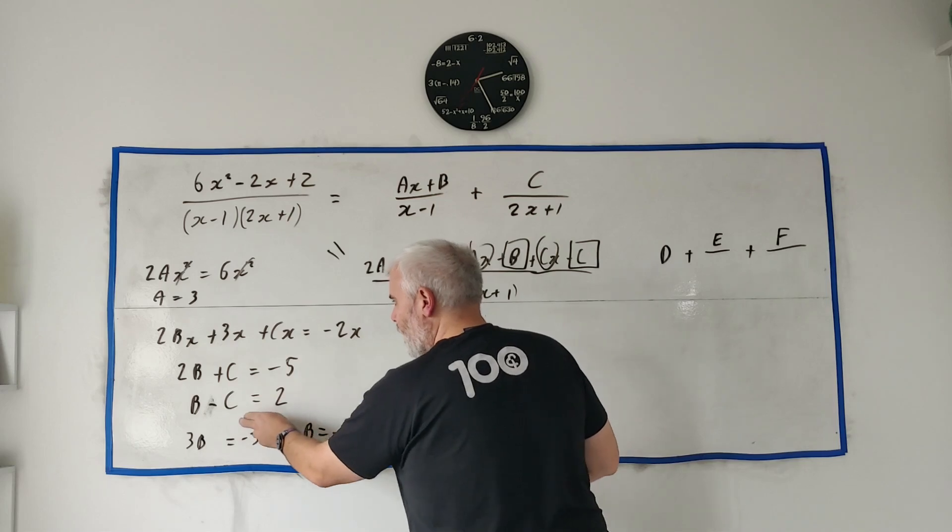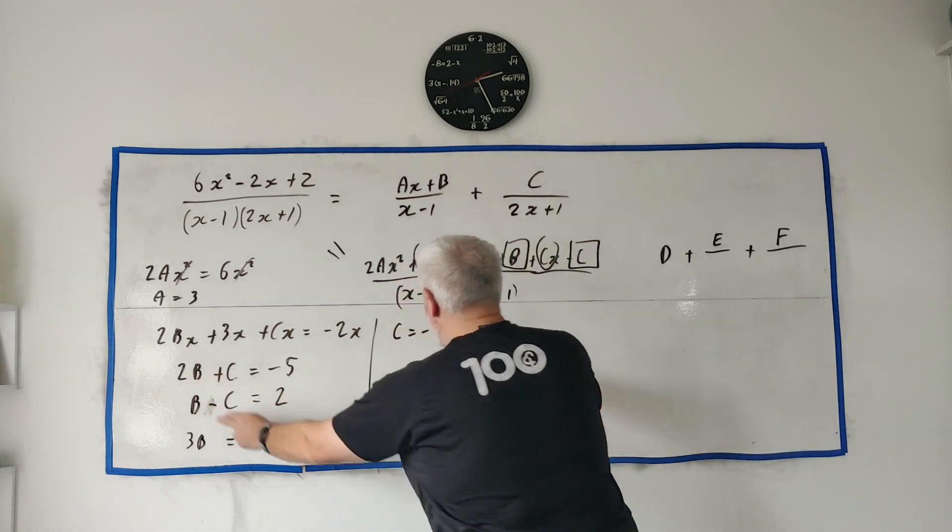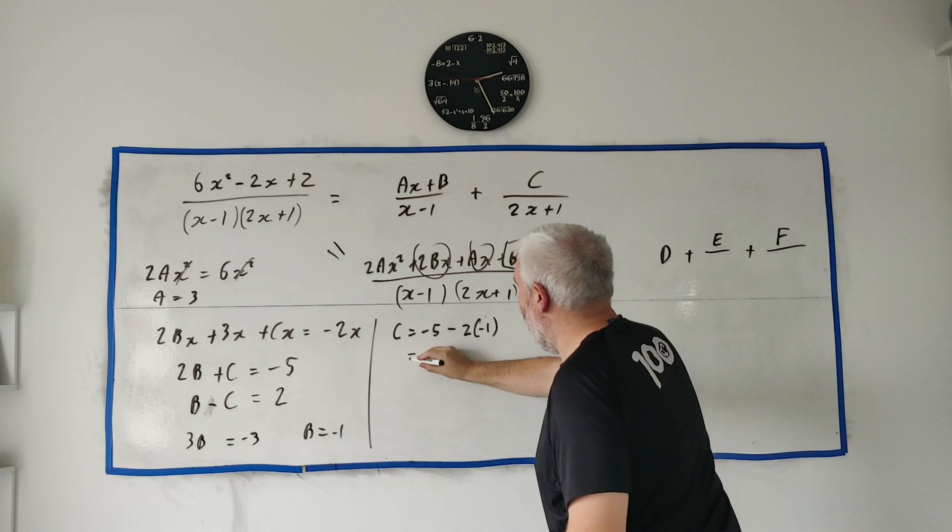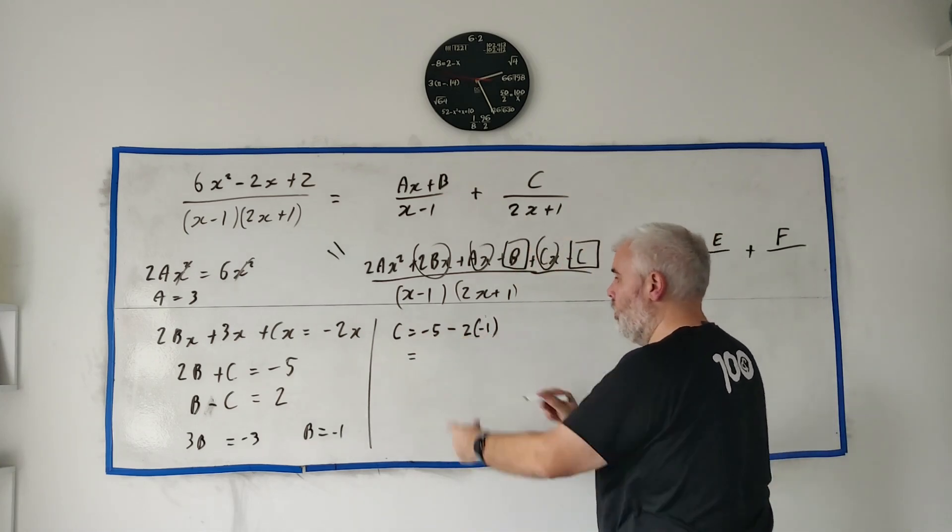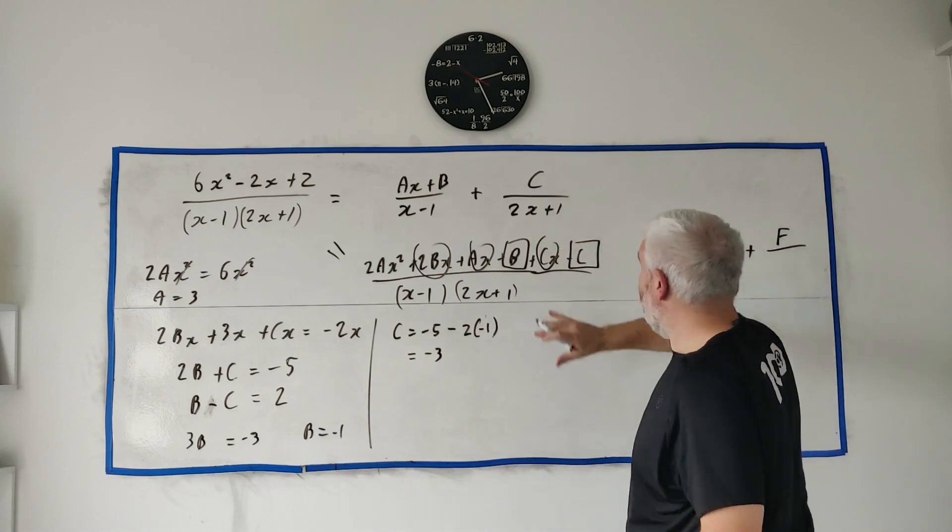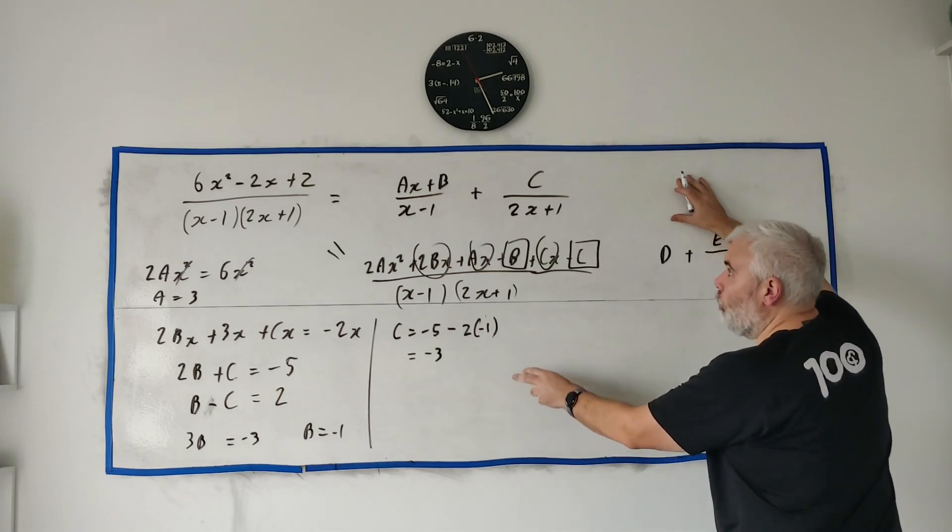Finally we need c. Pick any equation you want. I'll go ahead with this line here. I'll say c is equal to minus 5 minus 2b, but b is minus 1, so that's minus 5 plus 2 is minus 3. So the final answer.